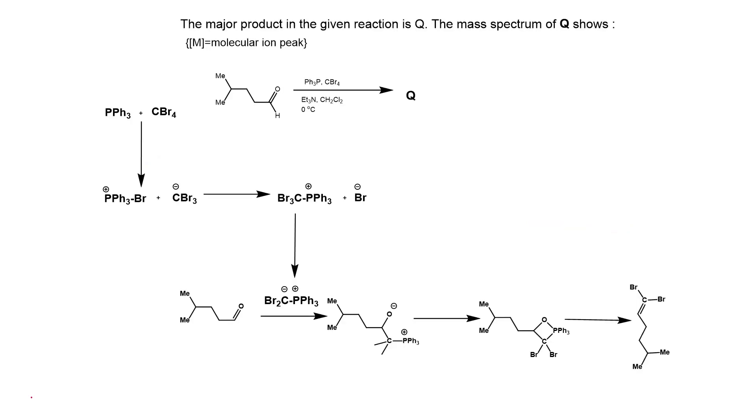What happens? Triphenylphosphine reacts with tetrabromomethane to form PPh3+ Br plus CBr3-. Now this is not very stable. It attacks here, taking out bromide ion in the reaction medium, forming Br3C-PPh3+.